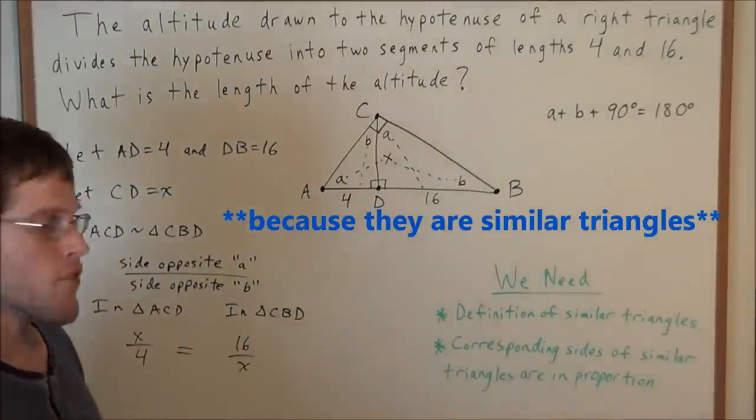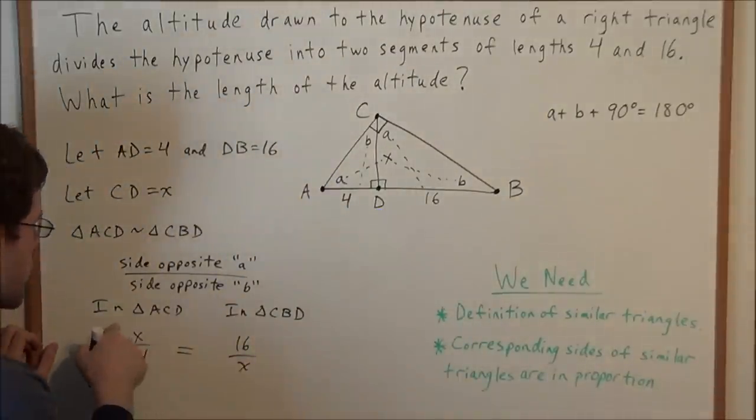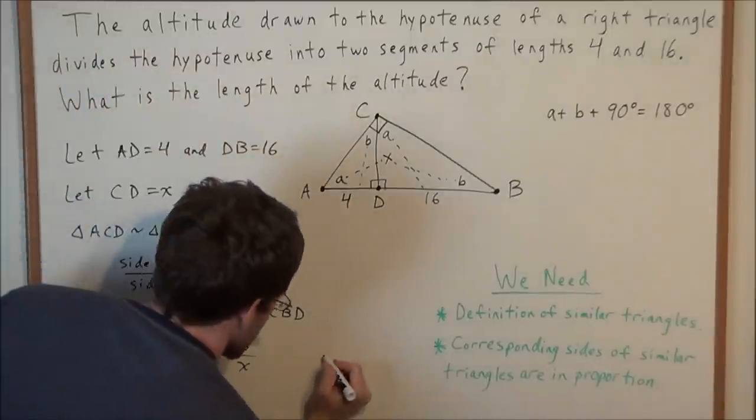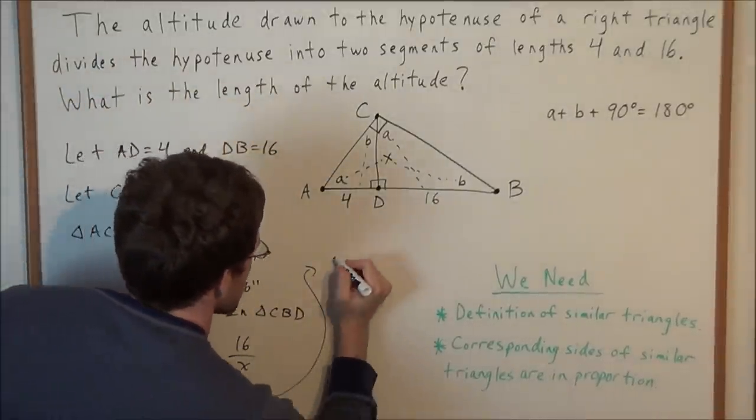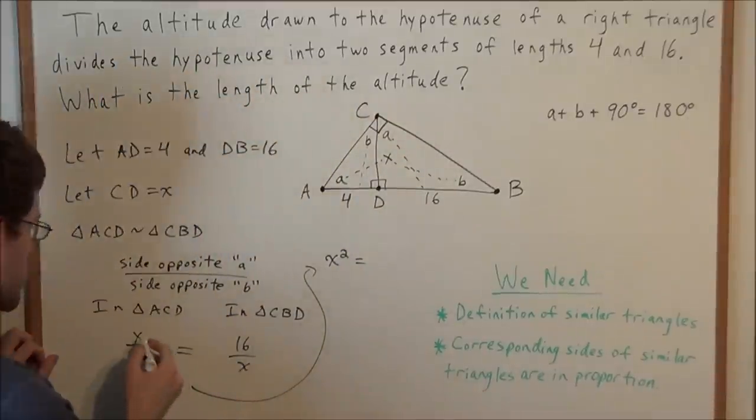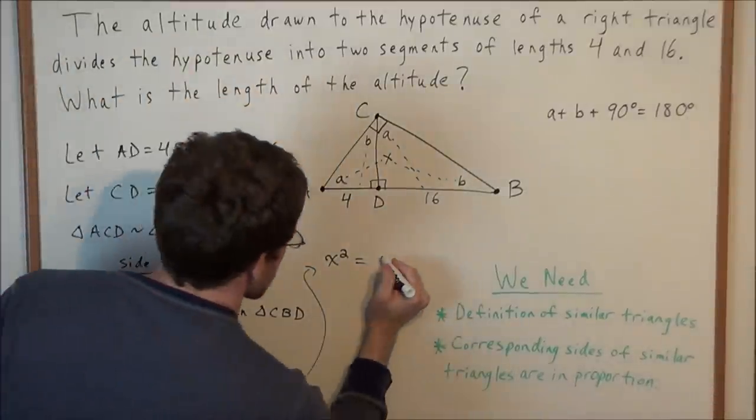So now all we're doing is solving for x, so we could cross multiply. We have x times x is x squared, so I'll write this next line over here. So we have x squared is equal to 4 times 16 is 64.